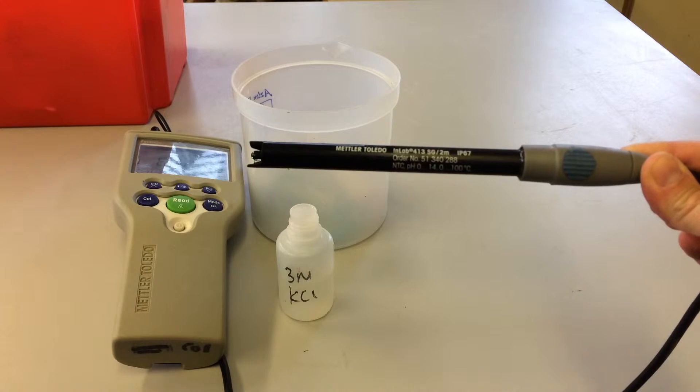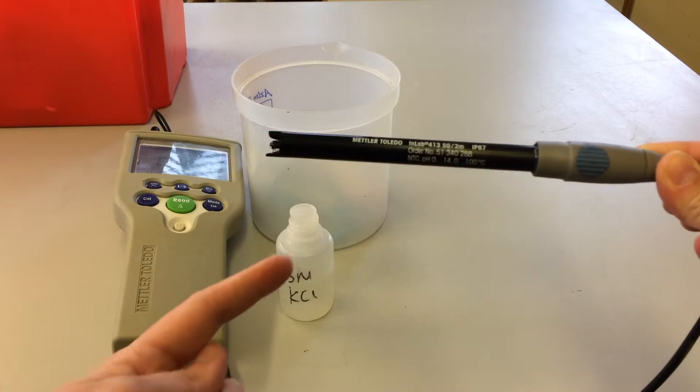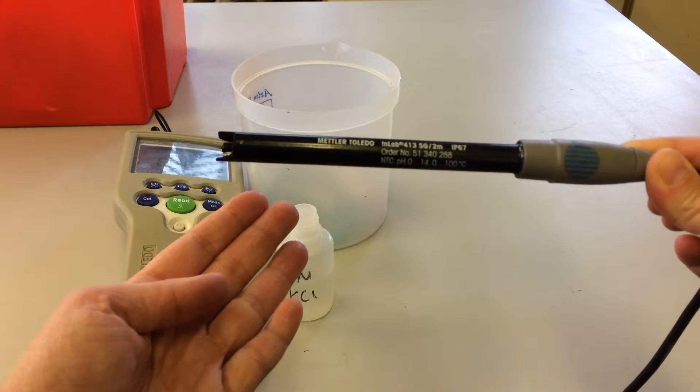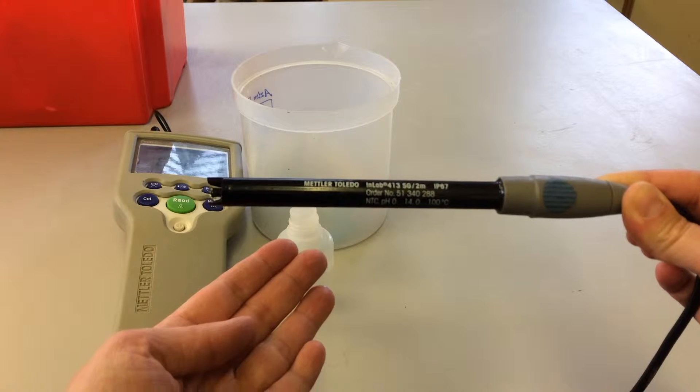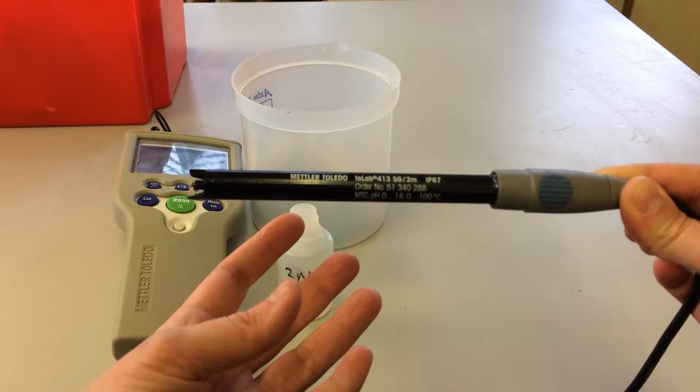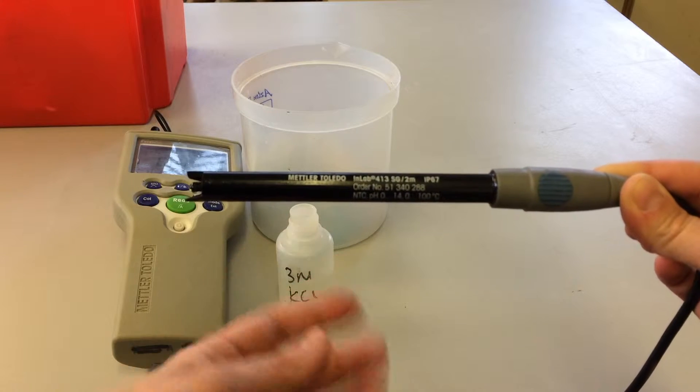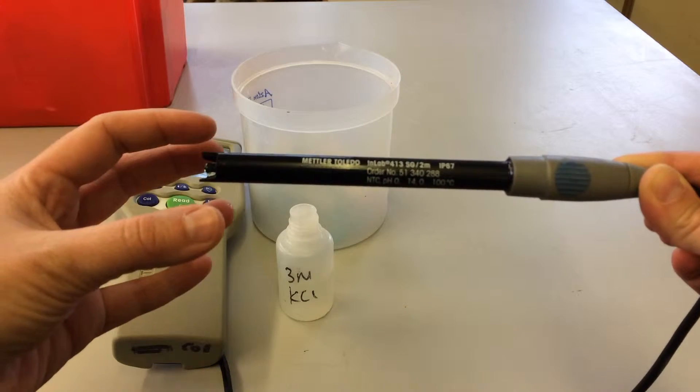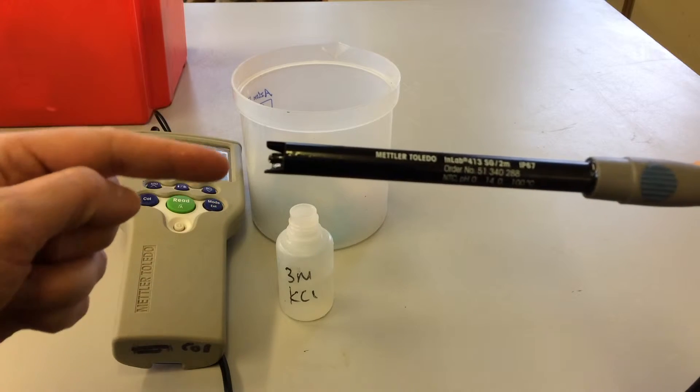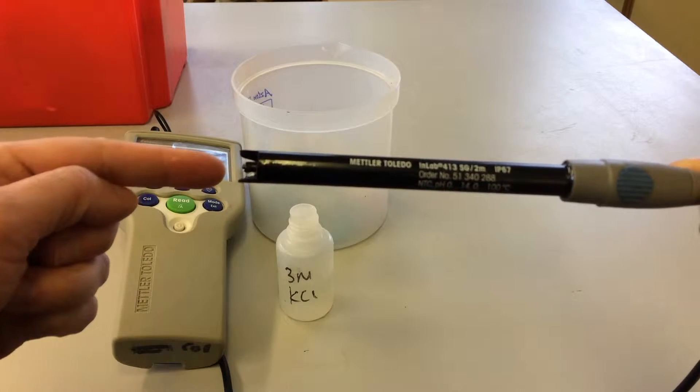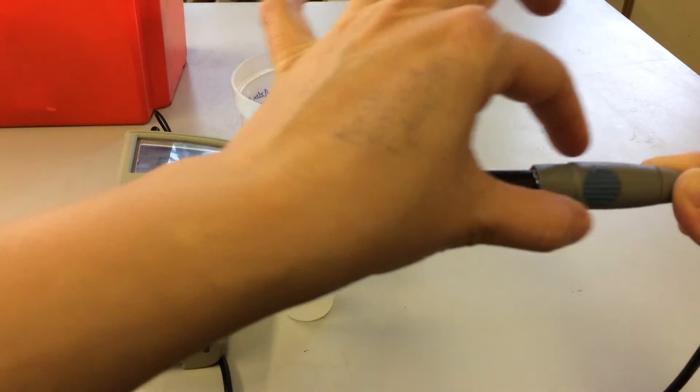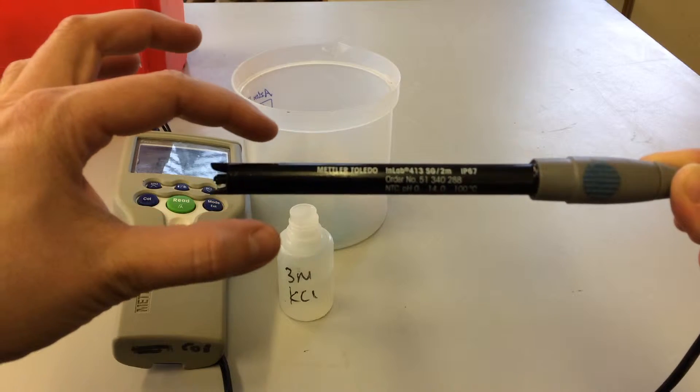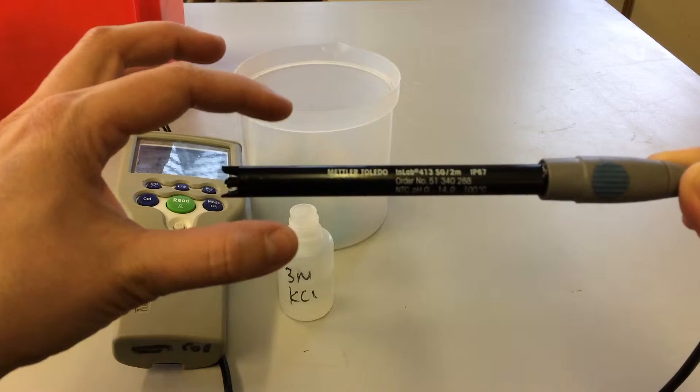Just to talk about the probe here, so this probe is a very expensive probe if you're a student, so bear in mind to handle this with care. One of these costs about 200 pounds. Now it's expensive because it has a thermometer integrated in here with a pH sensor and also this section here is made of glass quite often, and the wires in here can be quite sensitive to knocks and bangs.